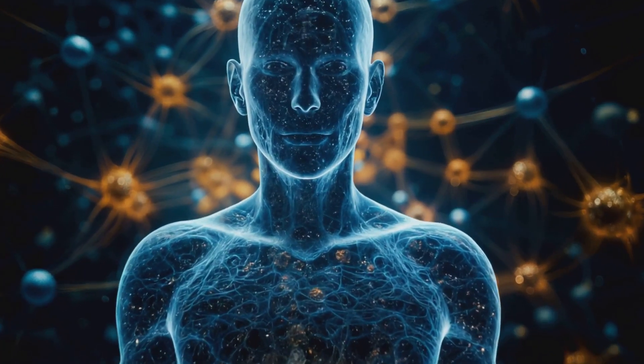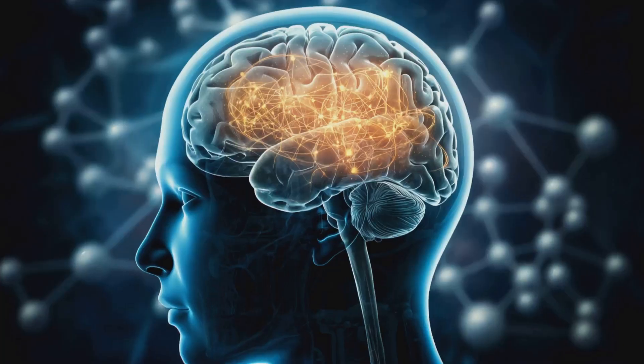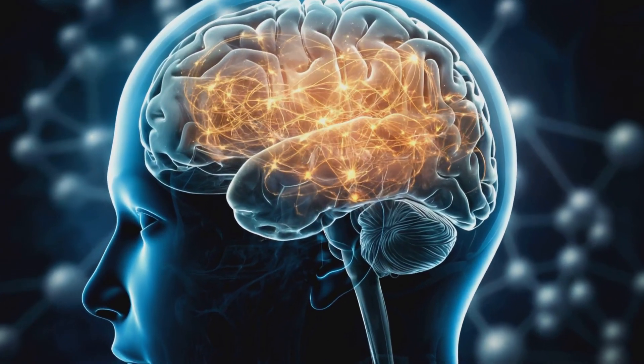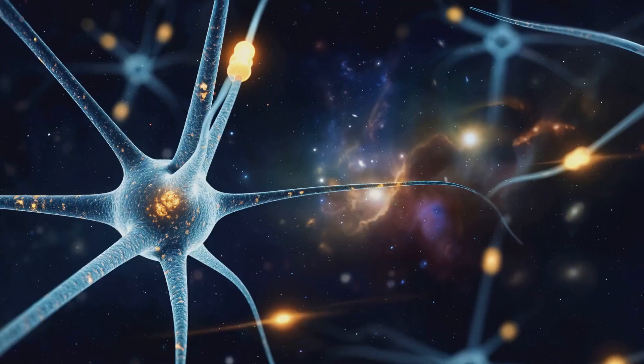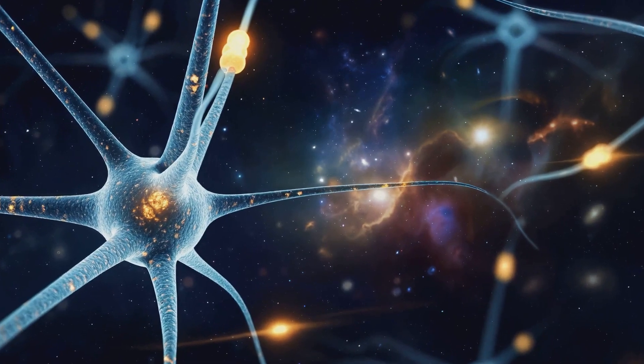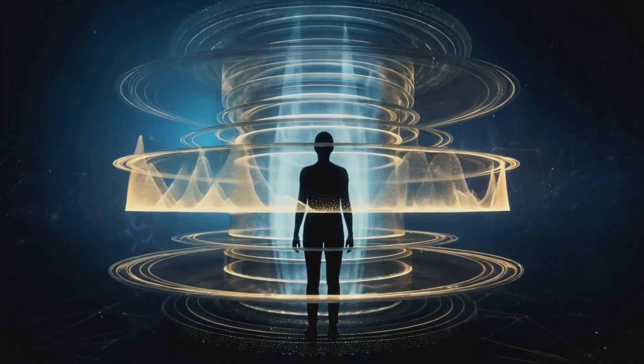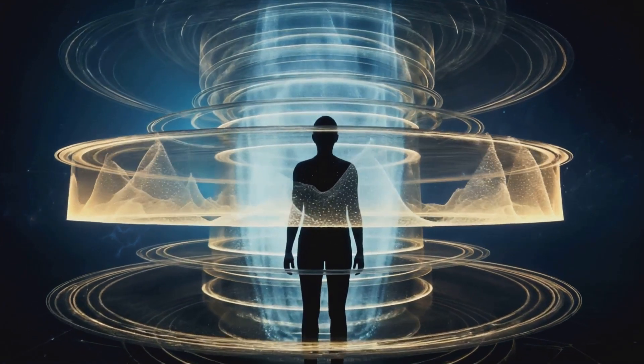And so consciousness itself is not an anomaly. It is another layer of this recursion, another process of stacking and refinement. Thought is entanglement. Memory is the imprint of interference and learning is the alignment of stacked probabilities.